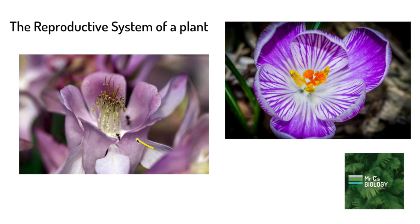If we have a look at one of these real plants we can see we have a petal there, and in the middle we've got two different types of things poking out. Over here is a stamen with an anther on the top and then a filament dropping down. And over here we have a carpel with a stigma at the top and a style dropping down, leading towards where the ovary is.